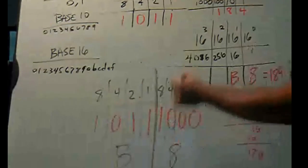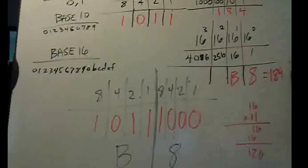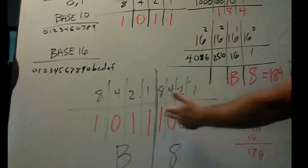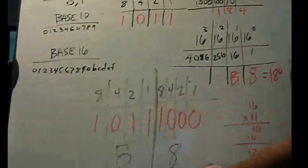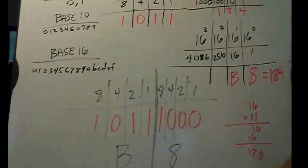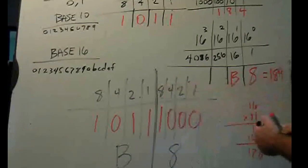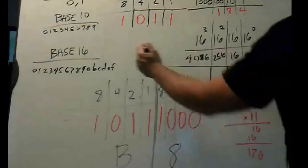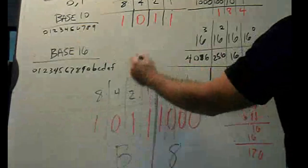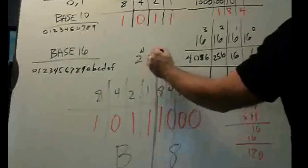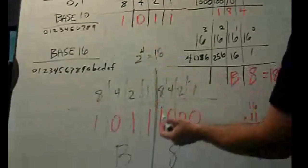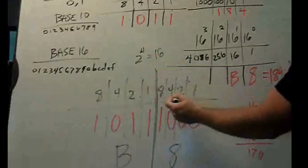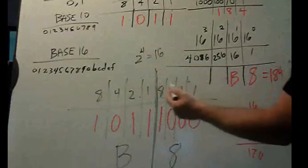Now, why is that? Well, 4 bits is 16 values. In other words, 2 to the 4th power equals 16. 2 times 2 times 2 times 2 is 16.